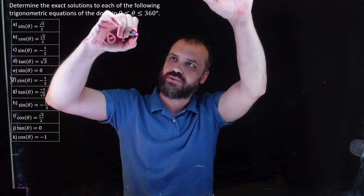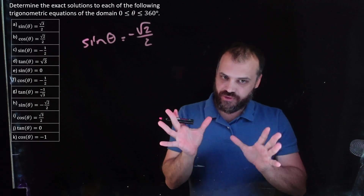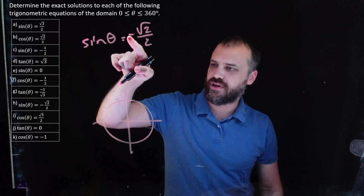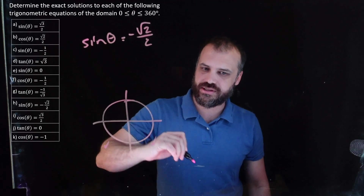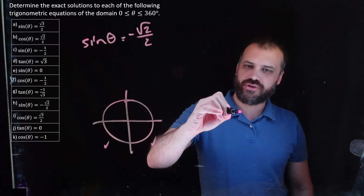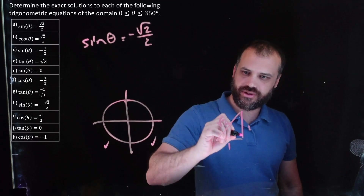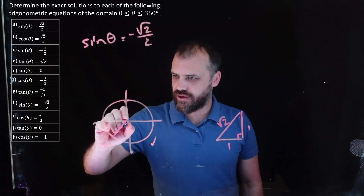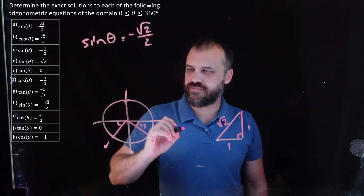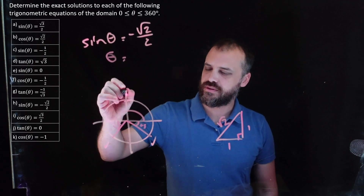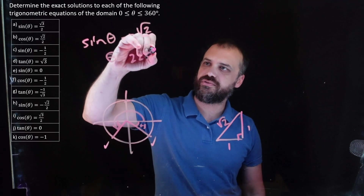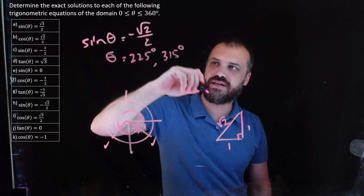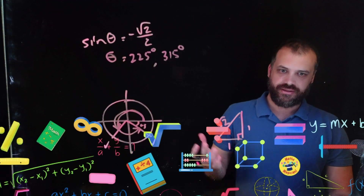Sin θ = -√2/2. Sine is the y-coordinate of our dot, and the y-coordinate is negative in quadrant three and quadrant four. Root two on two comes from the 45-45-90 triangle, so 45 degrees is the angle. Theta equals 180 plus 45 which is 225 degrees, or 360 minus 45 which is 315 degrees. Done!